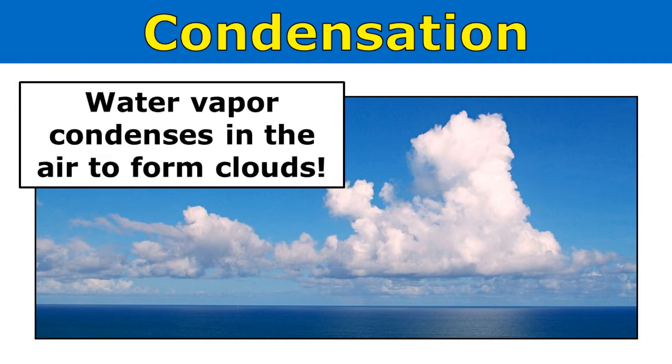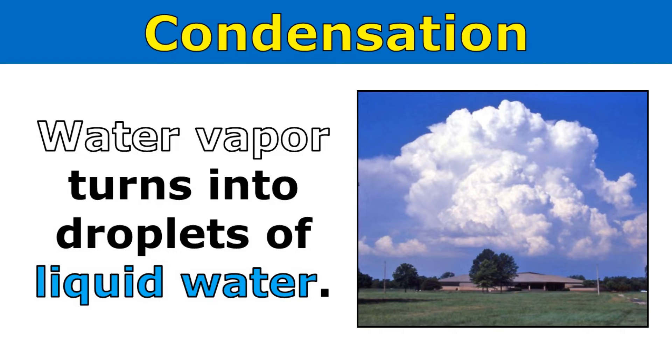Condensation is another important process in the water cycle. Water vapor condenses in the air to form clouds. Condensation occurs when water vapor turns into droplets of liquid water. So that means that clouds, which are formed by condensation, must be made of liquid water.